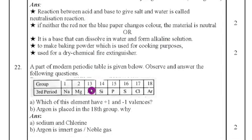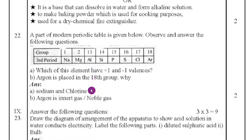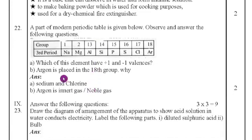22nd question. A part of modern periodic table is given below. Observe and answer the following question. Here they have given the table. We have to write which elements having plus 1 and minus 1 valency. Obviously, sodium having plus 1 because it is donating one electron. So, it become positive. Sodium positive, electropositive. And chlorine will receive one more electron. So, that will become negative. Chlorine and sodium is the answer.